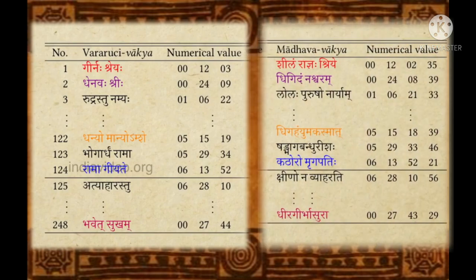In the 14th century, Madhava wrote down his work Venvaroha — a new set of sentences to encode similar numerical values to much greater precision.